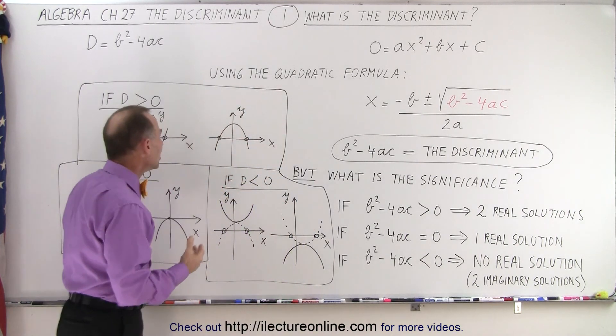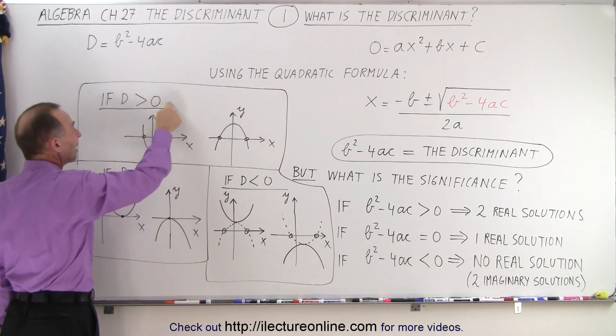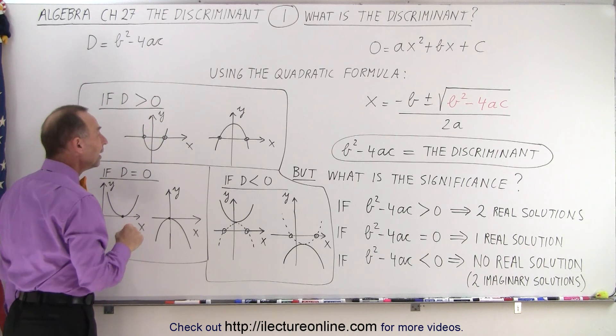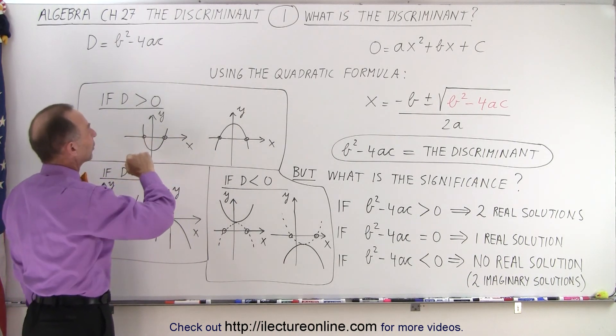Graphically it means the following: if the discriminant, again b² - 4ac, is a positive number, then the graph of the quadratic equation crosses the x-axis in two places.